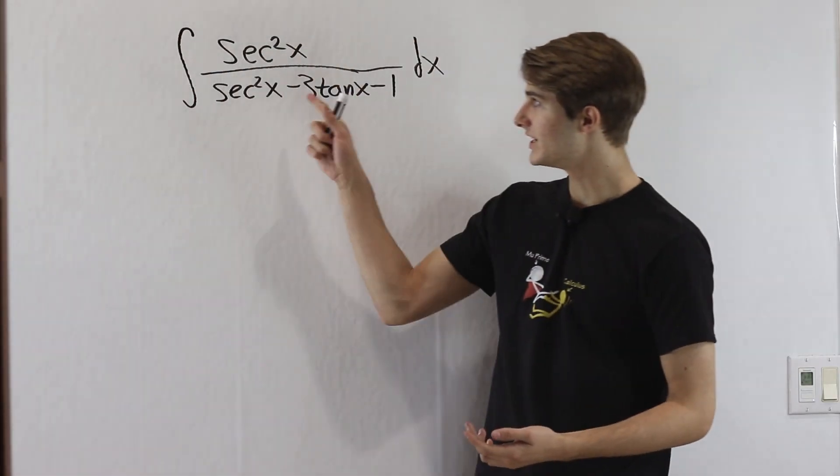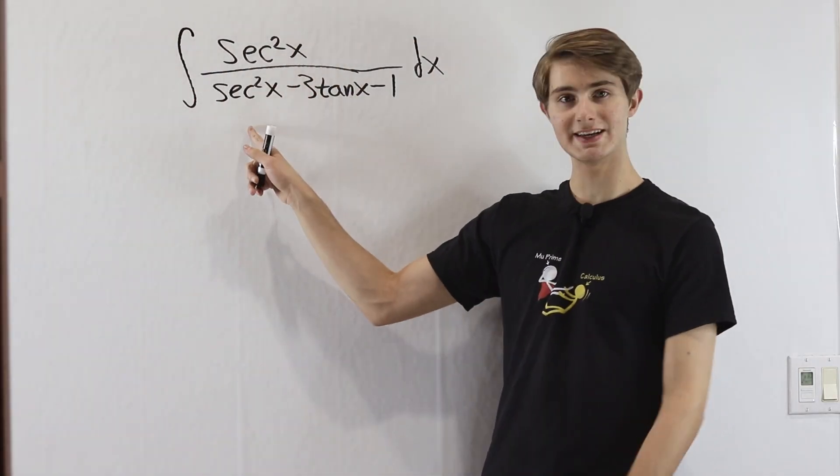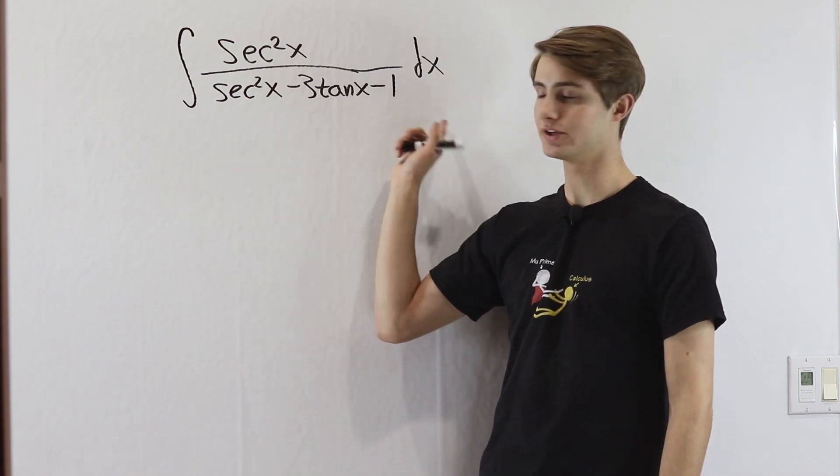So we are going to do the integral of secant squared x divided by secant squared x minus 3 tangent x minus 1.